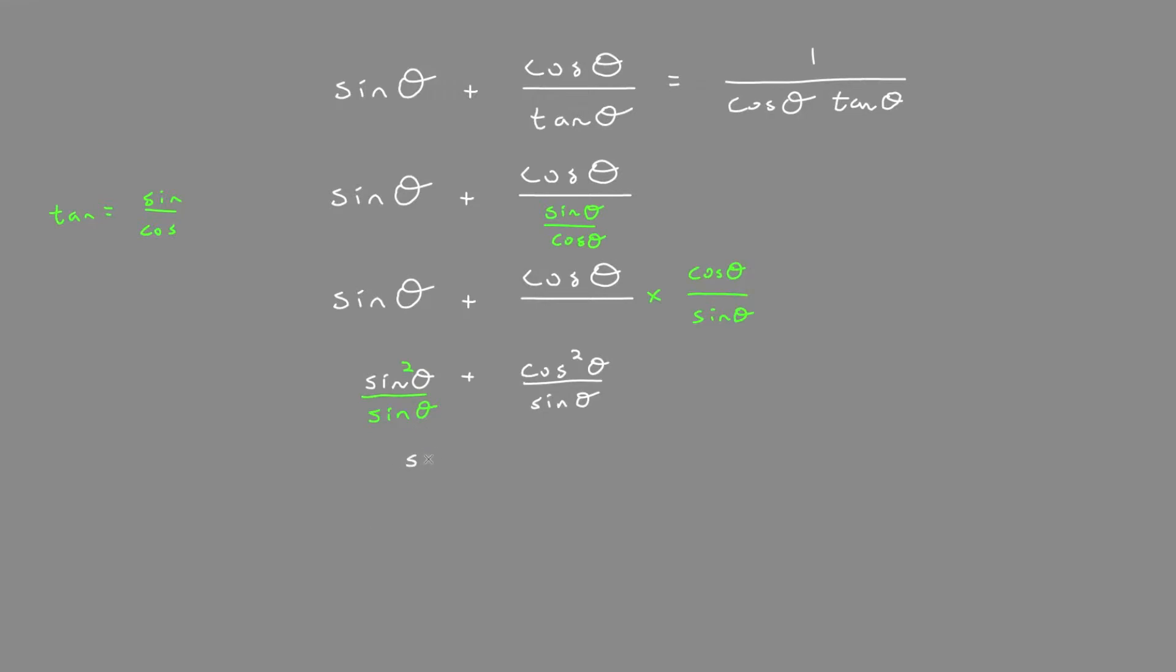We can see that the top, the numerator, when we have sine squared theta plus cos squared theta, is an identity. Sine squared theta plus cos squared theta equals one. So we could replace that with one.